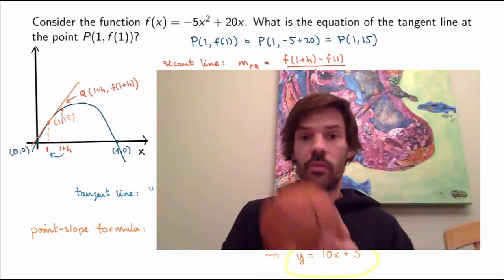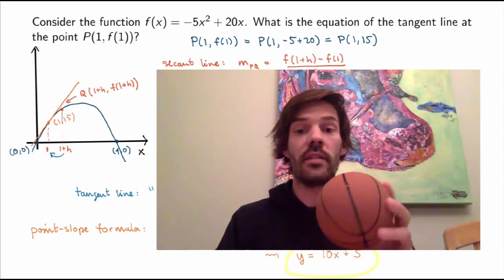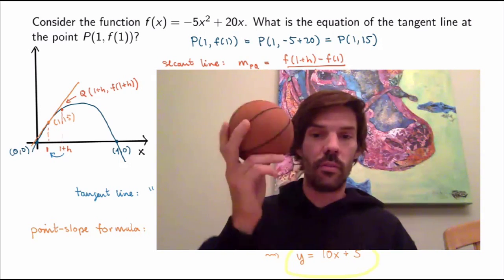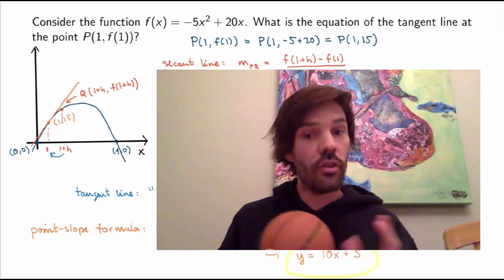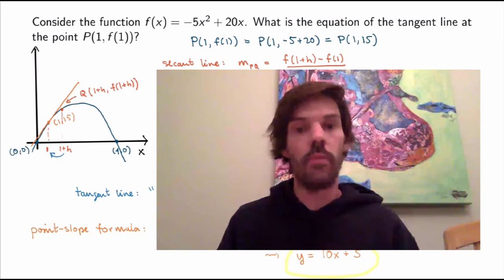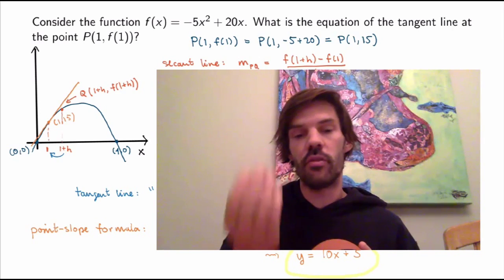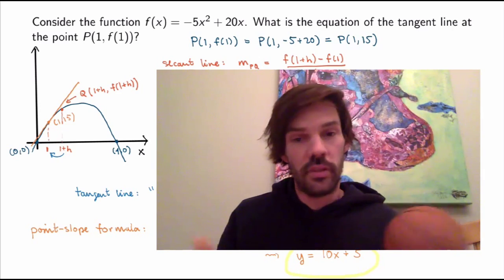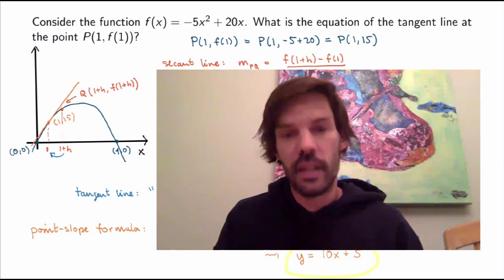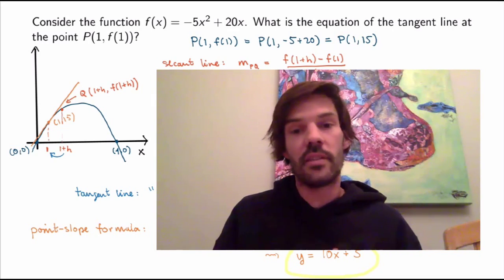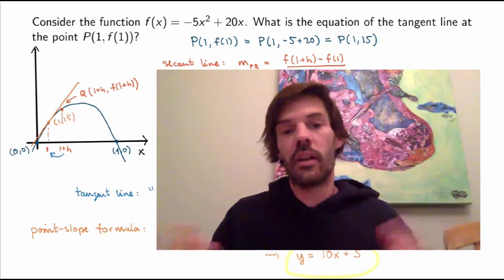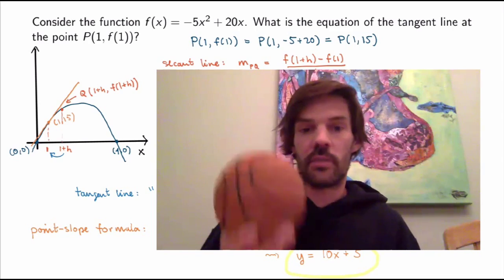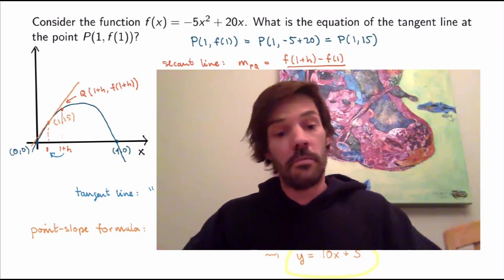Velocity is the derivative of the position function, which equals the slope of the tangent line. After one second the ball is still going upward — it hasn't reached maximum height — but it's slower due to gravitational deceleration. 10 meters per second is less than the initial 20 meters per second, so our calculation is consistent with what you'd expect from physics.